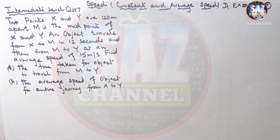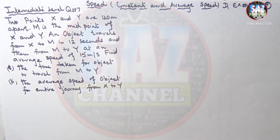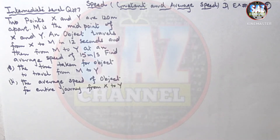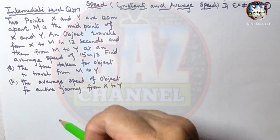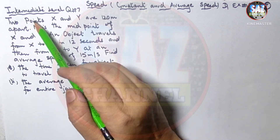Hello and welcome to Maths by Saas. This is my seventh lesson of D1, Chapter 9, Exercise 9D, which is about speed. Students will be learning and discussing an intermediate level question.